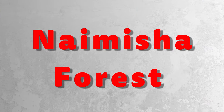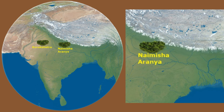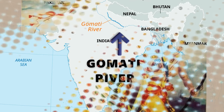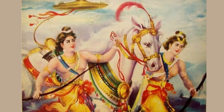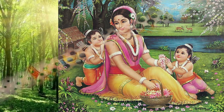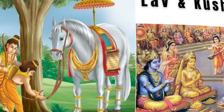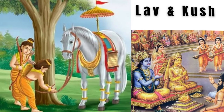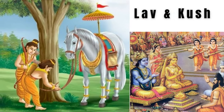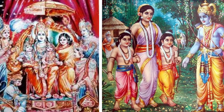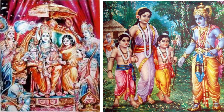Naimisha Forest: The Naimisharanya, also known as the Naimisha forest, is located along the banks of the Gomti river in present-day Uttar Pradesh. The Uttarakanda of the Ramayana mentions that Luv and Kush, the twin sons of Rama, narrated the story of Rama in the Naimisharanya during the time of the Ashwamedha Yagna. Rama unites with Sita and meets his sons Luv and Kush in Naimisha forest.